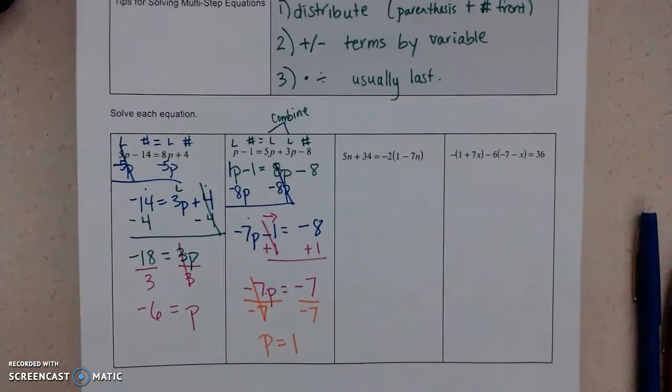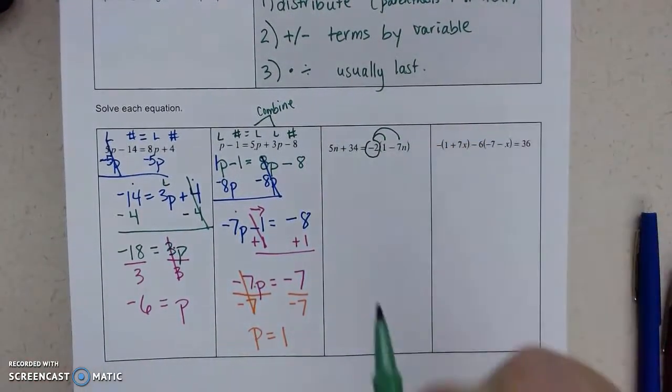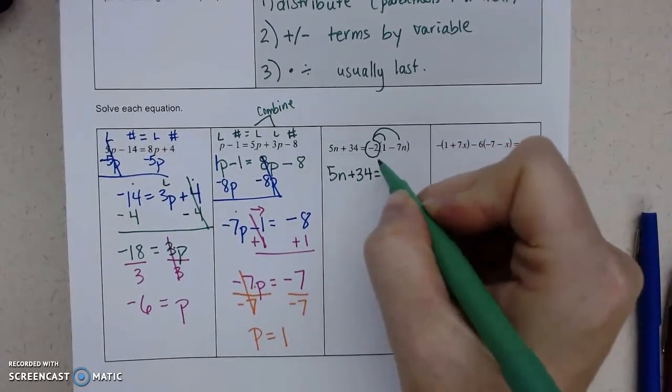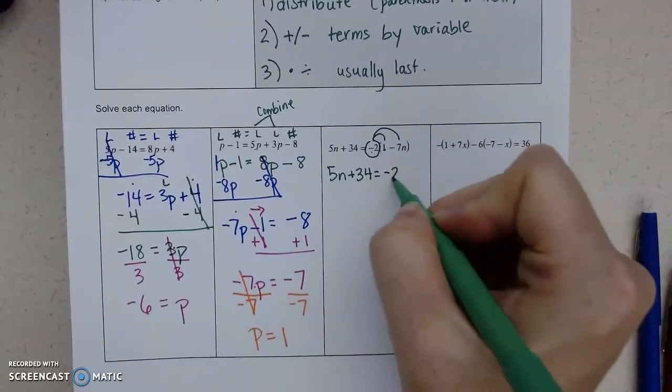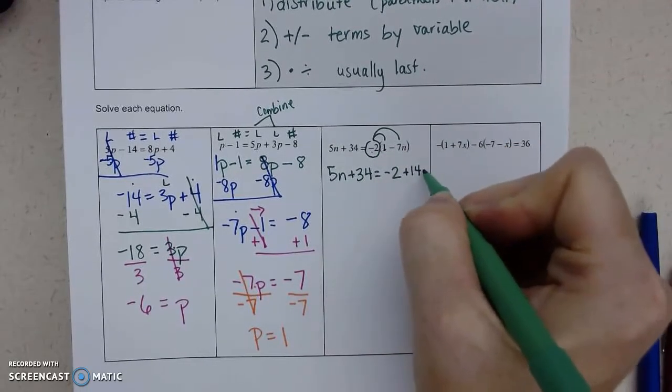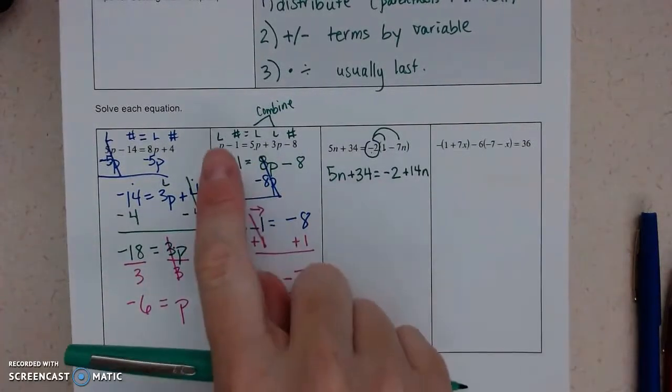All right, let's look at our third example. There's a set of parentheses, so I need to distribute the negative 2 to both terms. So the left side stays the same. Negative 2 times 1. Negative 2 times negative 7 is positive 14. N stays.